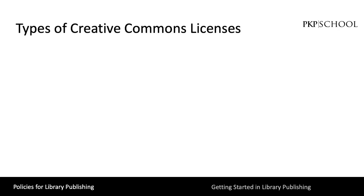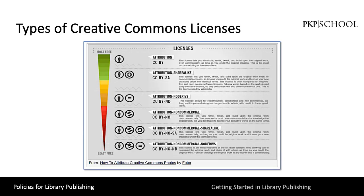There are seven types of standard Creative Commons licenses available, ranging from the most open license indicated here at the top of the graphic down to the more restrictive licenses indicated lower down. We will explore each license in more detail on the next several slides.